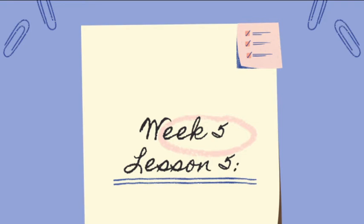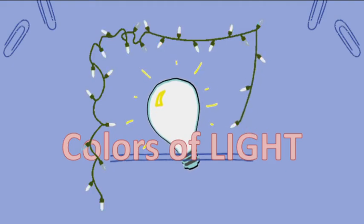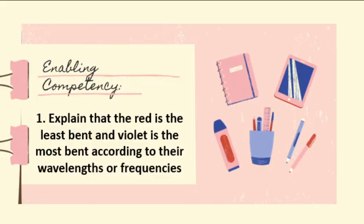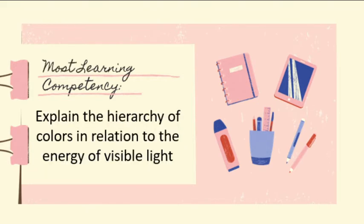We are now in our Week 5, Lesson 5: Colors of Light. Our enabling competencies are: number one, explain that red is the least dense and violet is the most dense according to their wavelengths or frequencies; number two, demonstrate the existence of the color components of visible light using a prism or diffraction grating.